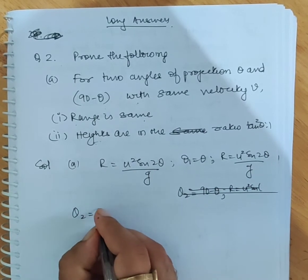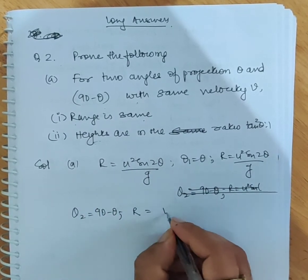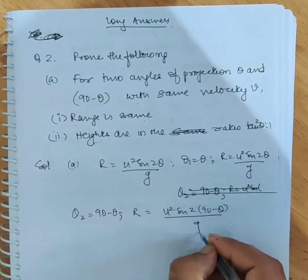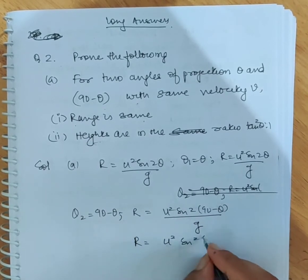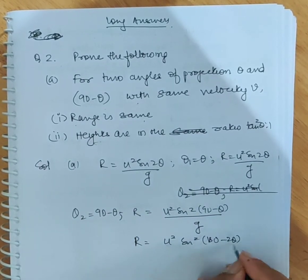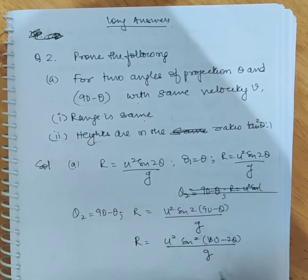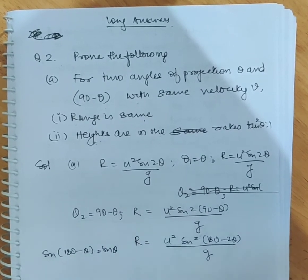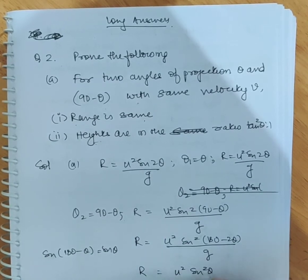θ₂ is 90 minus θ. Range is equal to u²sin2(90-θ)/g. Multiply it and use sin(180-2θ)/g. Now we all know that sin(180-θ) equals sinθ, so we can simply write R = u²sin2θ/g.